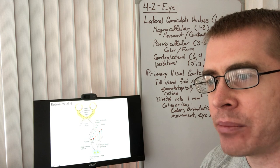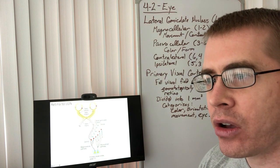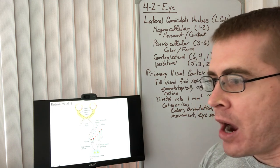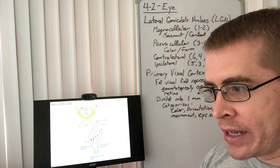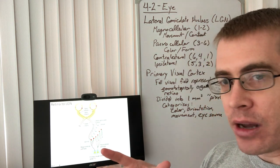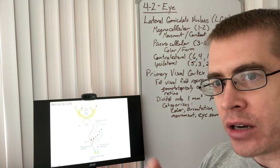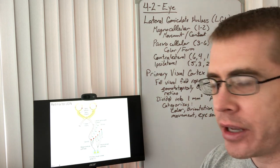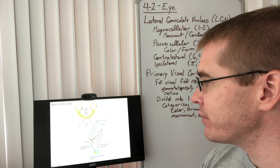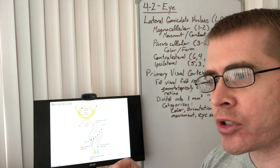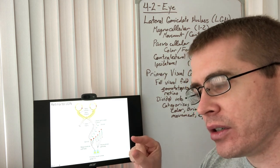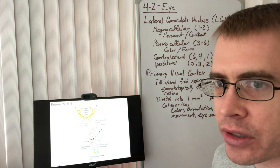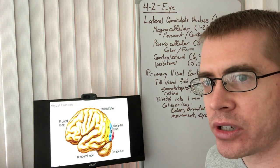A subset of the occipital cortex called the primary visual cortex receives this information. The primary visual cortex is designated number 17 in Brodmann's scheme of areas of the brain, which we'll learn about later. Area 17, the primary visual cortex, is the gyri immediately surrounding the calcarine sulcus in the occipital cortex.